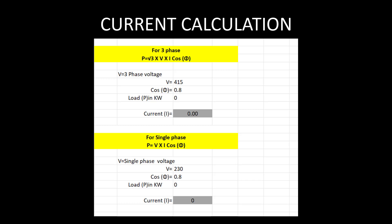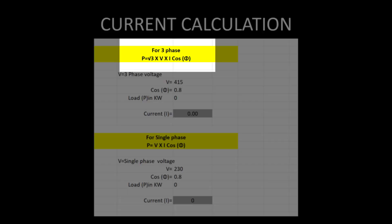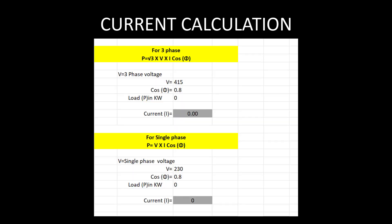To find the current rating, an Excel sheet has been prepared and can be downloaded from the description. For a three-phase system, the power equation is P = √3 × V × I × cosφ, where cosφ is the power factor and V is the standard three-phase voltage. For a load of 30 kilowatt, entering 30 in the Excel sheet gives a load current of 52.23 amps.